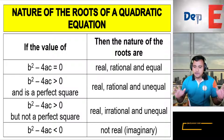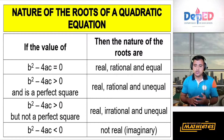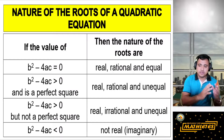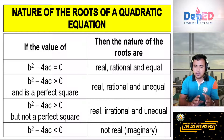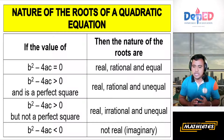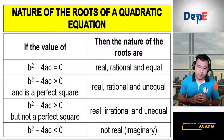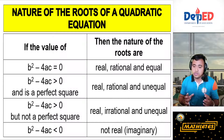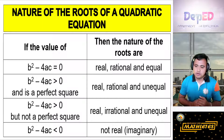These are the natures of the roots of our quadratic equation based on the value of our discriminant. If the value of our discriminant is equal to 0, then the nature of the roots of our quadratic equation could be real, rational, and equal.